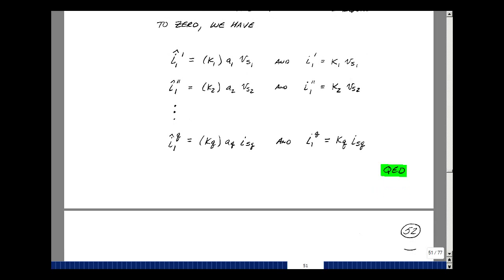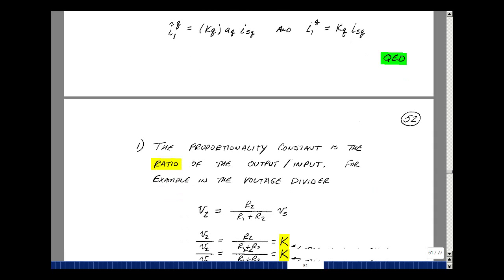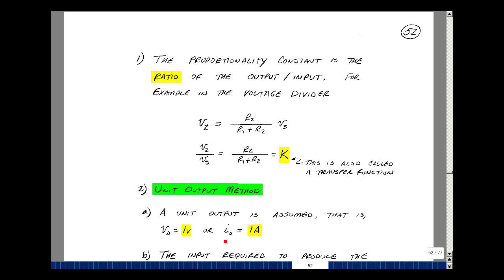Now we've actually seen some of this already, especially when we had single input systems. The proportionality constant is actually the ratio of output to input. For example, take a look at the voltage divider.